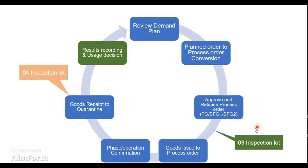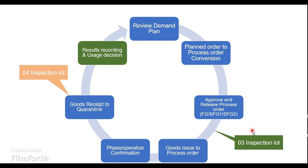In this topic we are going to discuss about the 03 inspection lot, also called the in-process inspection. The stage where this 03 inspection lot gets created will be as soon as we release the process order or the production order. Starting from the demand plan, we have planned orders created based on the MRP run, which get converted into a process order or production order. As soon as the production order gets released, that is where we will have the 03 inspection lot generated in SAP.